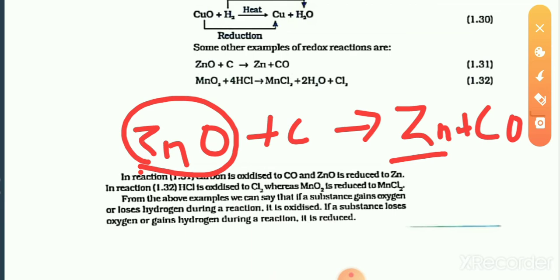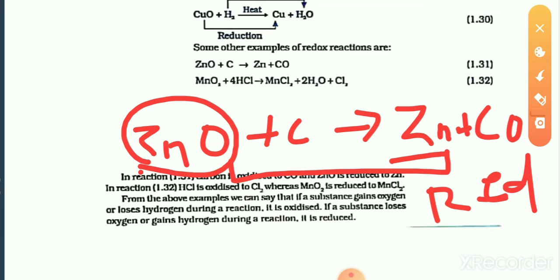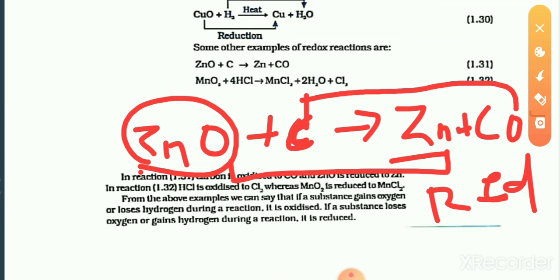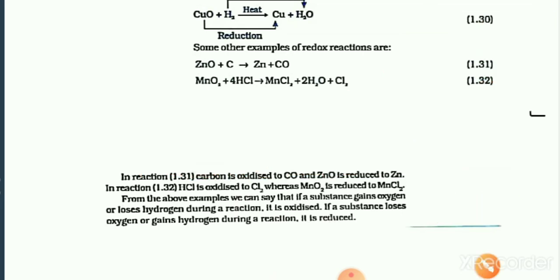Oxygen is removed, so reduction takes place. Now look at carbon: on the reactant side there is a single carbon, but on the product side oxygen is added to carbon. Carbon gains one oxygen — which means oxidation takes place. This is an example of a redox reaction.